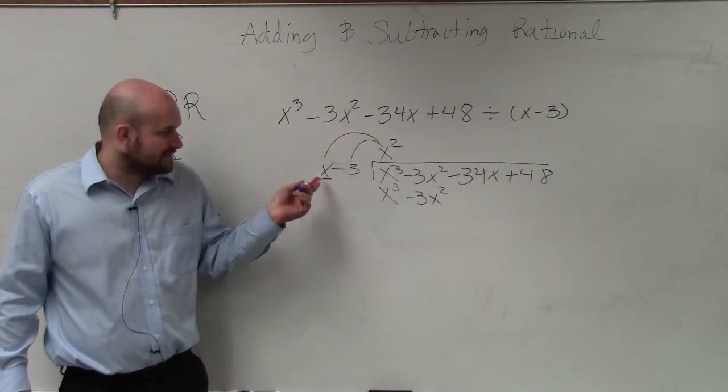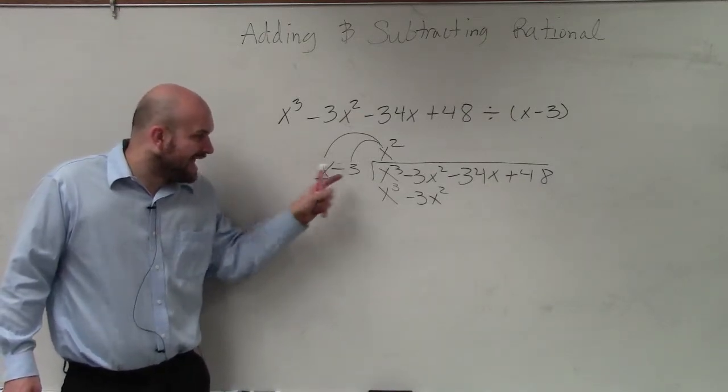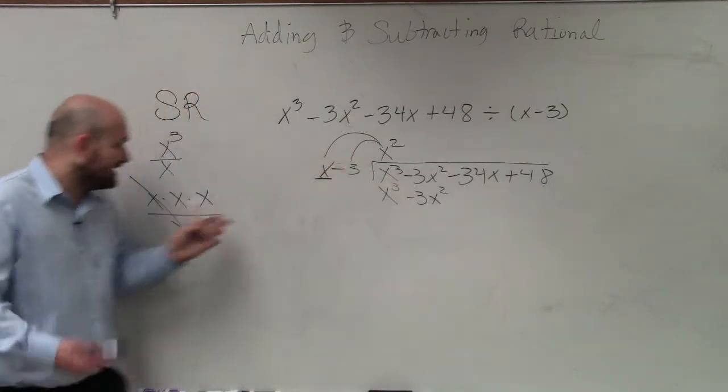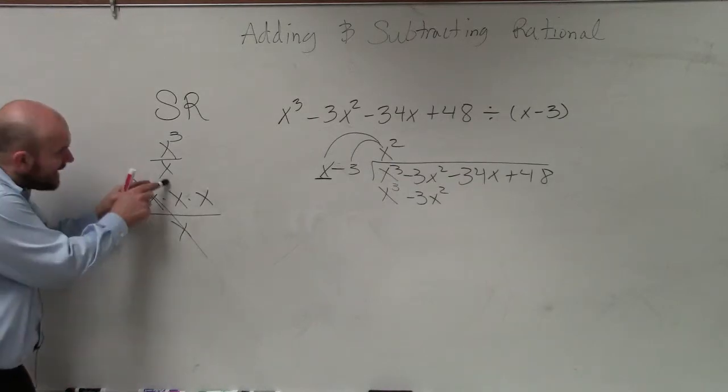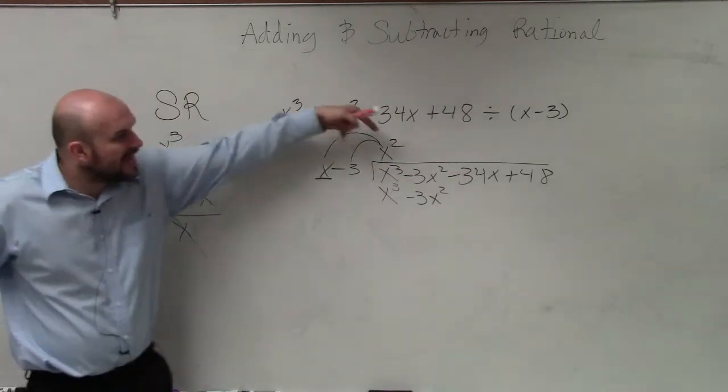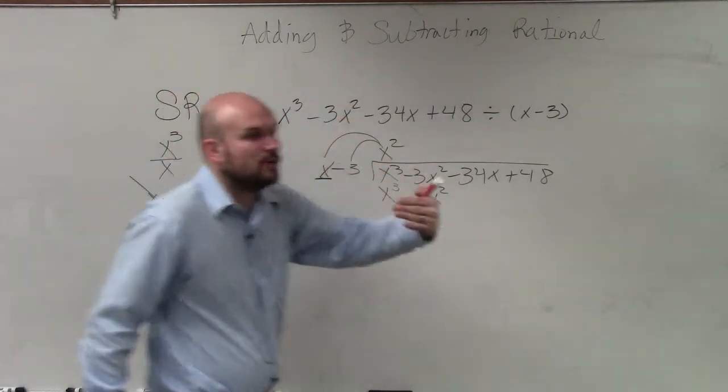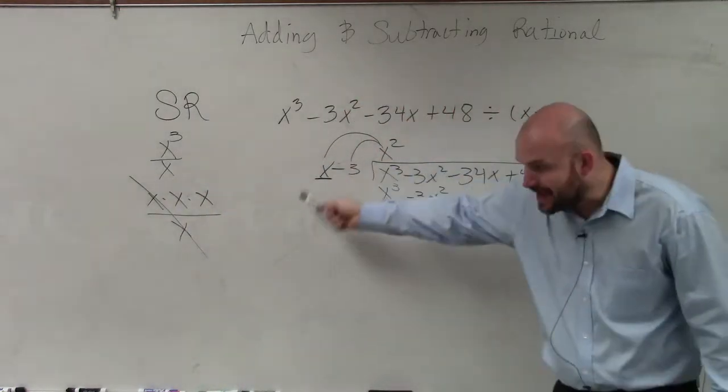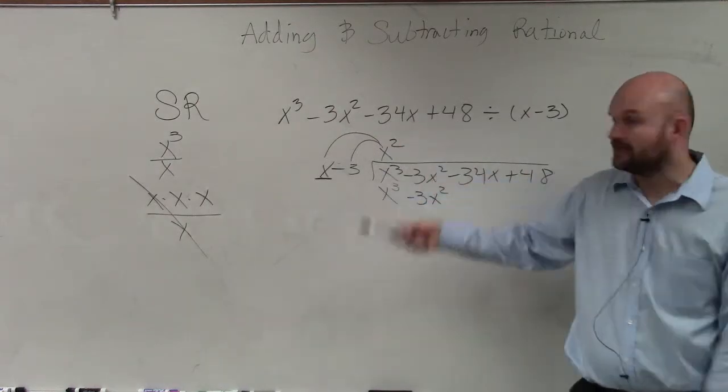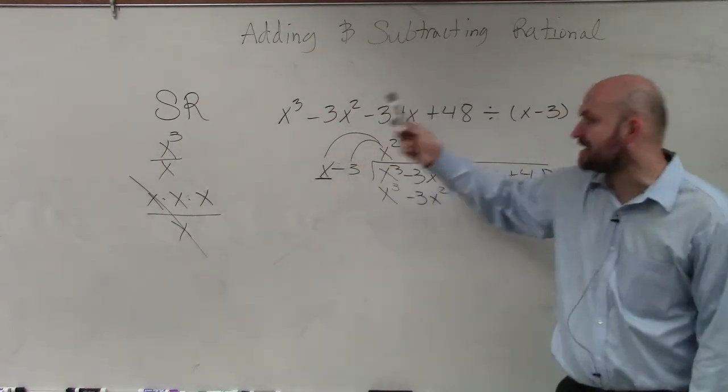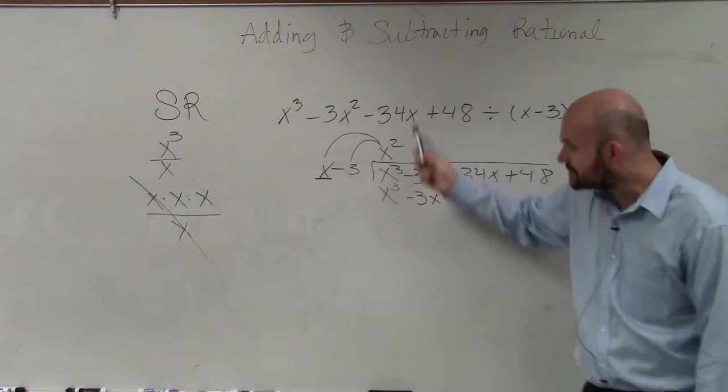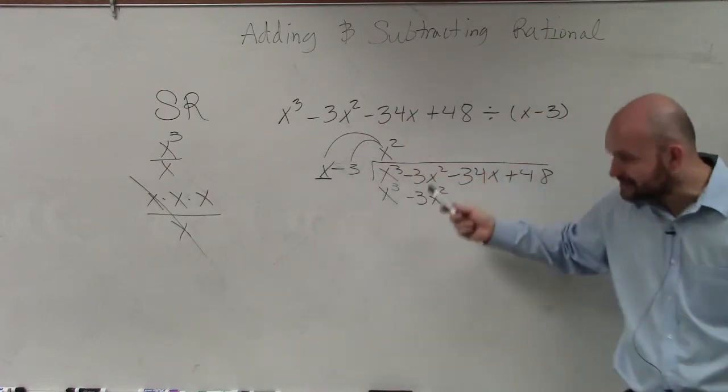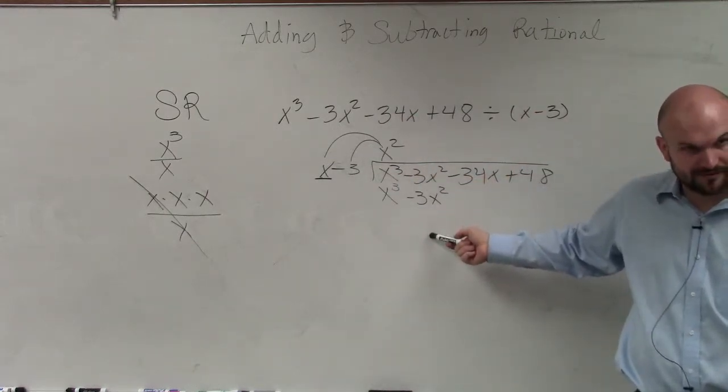I'm not starting with x squared on the top. I'm dividing x into x cubed. Again, as I showed you, x divides into x cubed x squared times. Then whatever you get for your quotient, you have to multiply that by every term in your divisor. So x squared times x is x cubed. x squared times negative 3x is negative 3x squared. Does everybody follow me there?